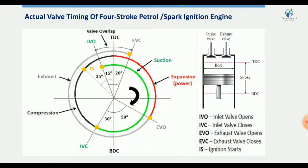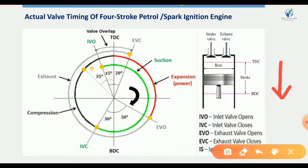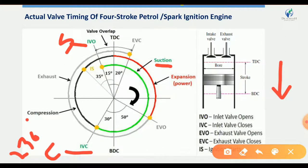In the suction stroke, the inlet valve is open and exhaust valve is closed. The suction process starts from top dead center (TDC) to bottom dead center (BDC) as the piston travels down. The inlet valve opens 15 degrees before TDC. After BDC, the inlet valve closes 30 degrees after BDC. So the inlet valve is open for approximately 230 degrees, covering the suction process.